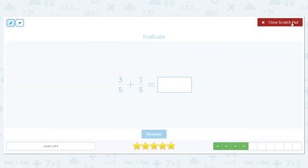Three fifths plus one fifth. Denominators are the same. Three plus one is four fifths. Four and five do not have anything in common, so our answer is four fifths.